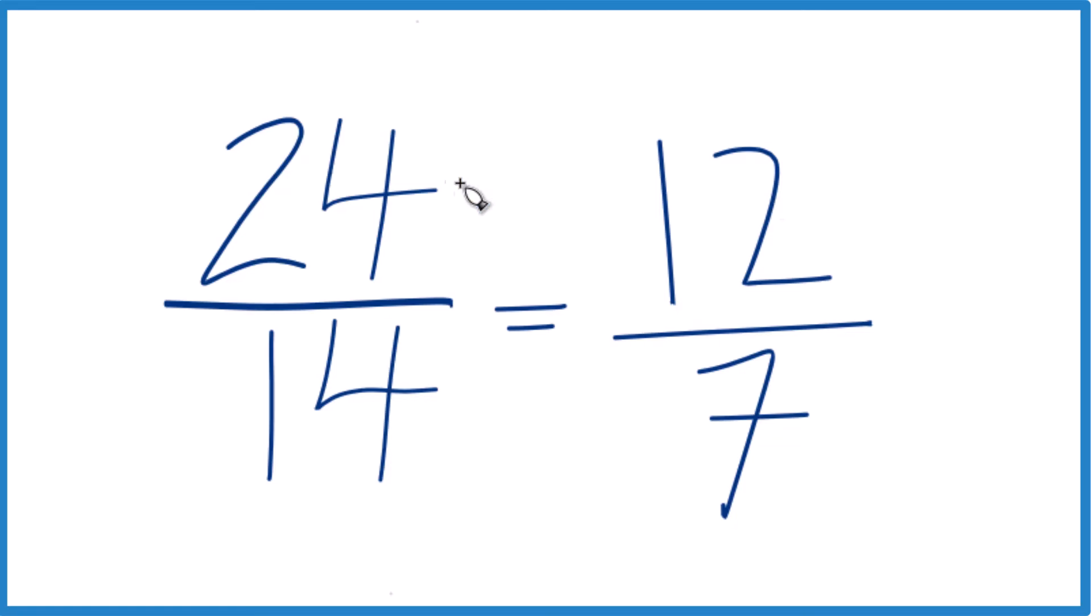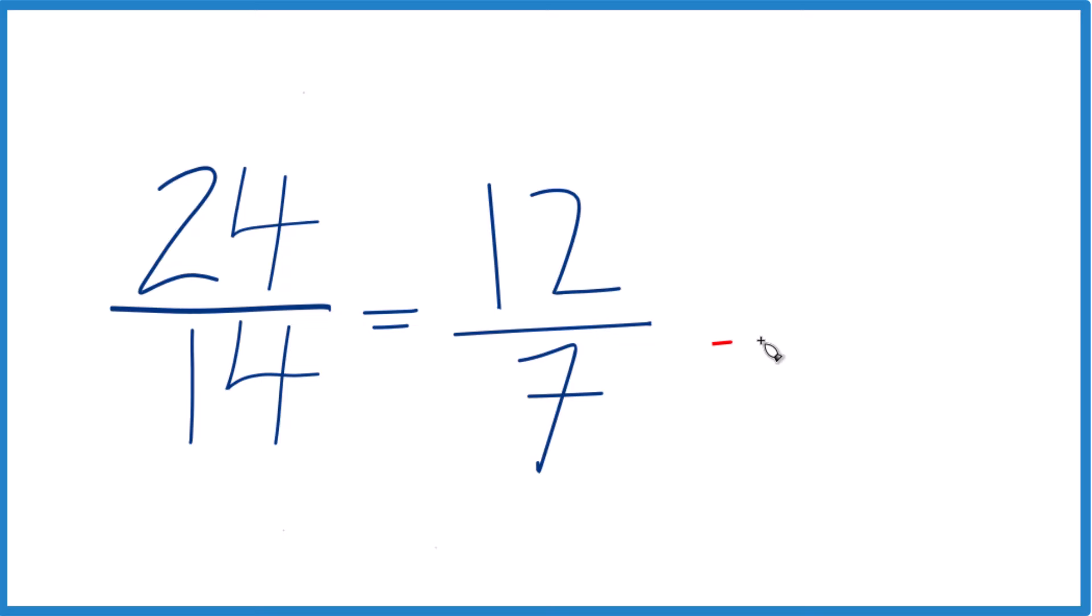So when we simplify 24 fourteenths, we get 12 sevenths. We can't reduce it any further. This is an improper fraction, though, because 12 is larger than 7. So we could change it to a mixed number.